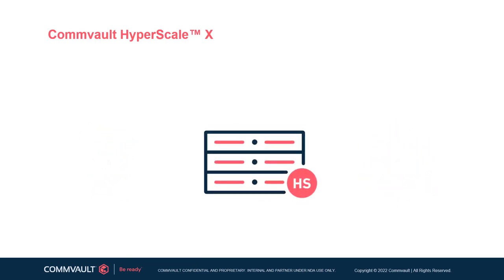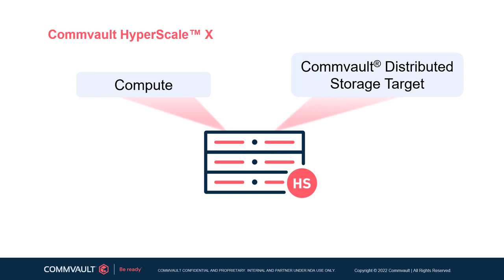Commvault Hyperscale X is our next-generation integrated appliance that converges the core Commvault architecture components with Commvault's intelligent data management software into an intuitive, easy-to-deploy, scale-out appliance. It is fully integrated with Commvault's distributed storage file system, which builds the foundation to converge storage, container, and cloud technologies, allowing automation of processes and simplification of multi-cloud connections. Commvault Hyperscale X can also be deployed utilizing a validated reference design based on commodity hardware from several leading technology vendors and has a dedicated module in this training.